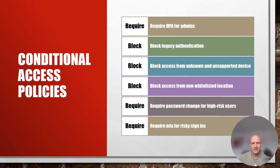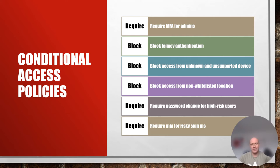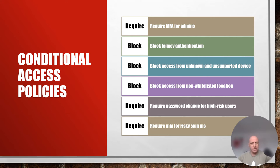We can also create block access lists from non-whitelisted locations. For example, if our business has presence in only the United States and United Kingdom, we create a whitelist that includes only those two locations and block everything else by default. This is a great way to reduce the potential risk of someone trying to log in from China or other high-risk countries where we see a lot of threat actor activity.